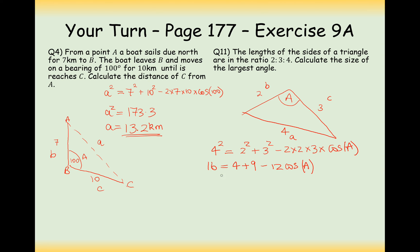Now this here is going to be 16 equals 4 plus 9 minus 12 lots of cos A. And here we take this onto the other side and we get 3 equals minus 12 cos A. So here we divide by minus 12 and we get minus 3 over 12 equals cos A. So now doing inverse cos of minus 0.25 and we're going to get here 104.5 degrees. Rounding to 3 significant figures we get 104 degrees.